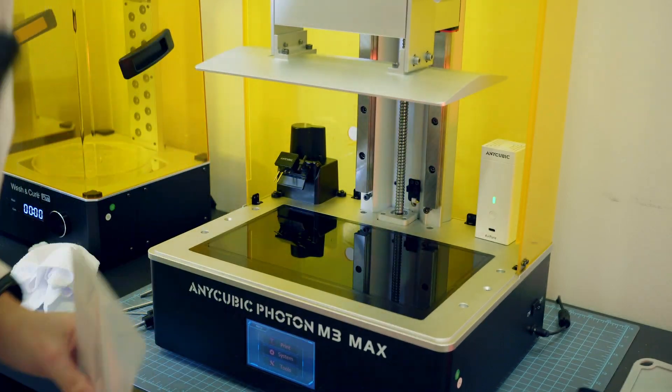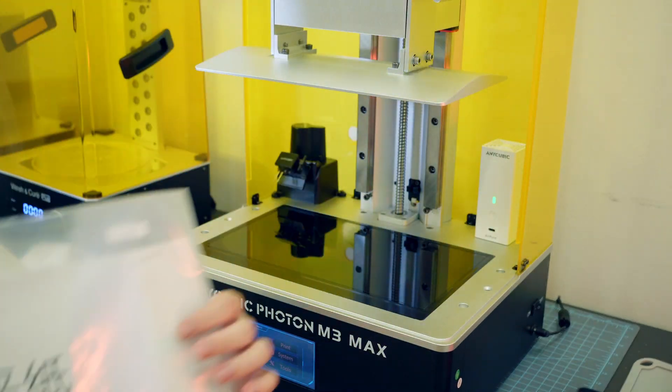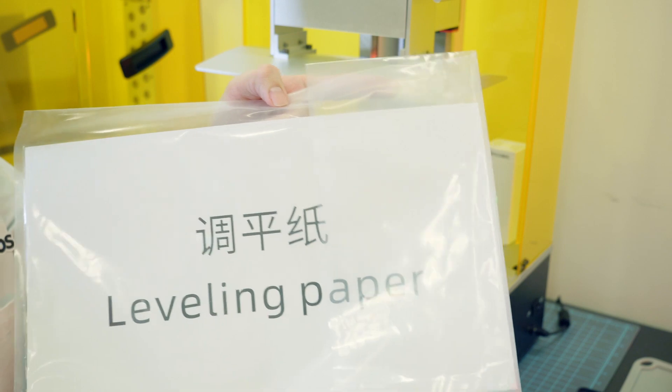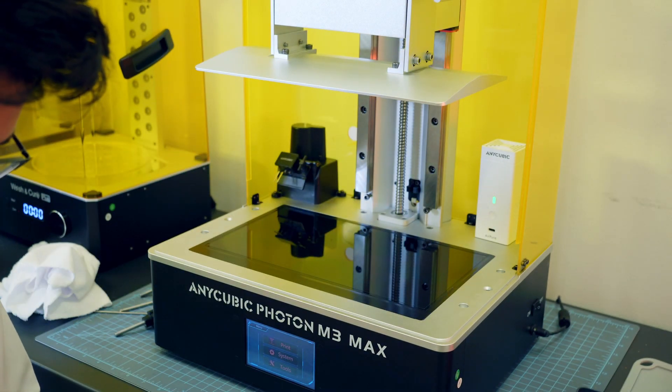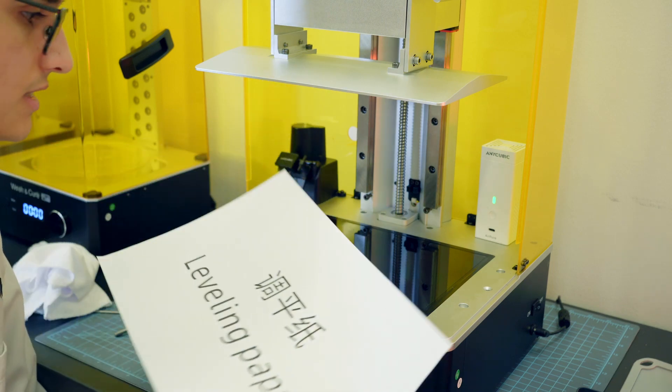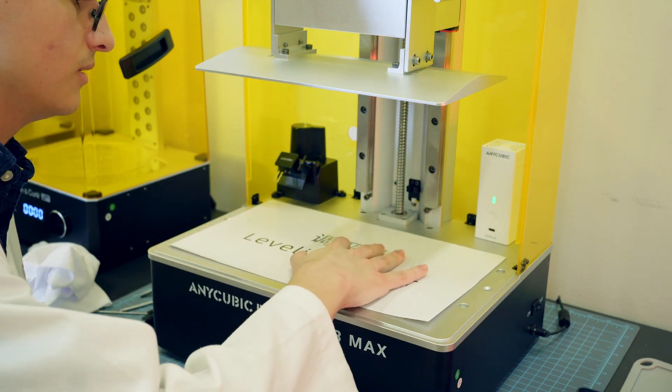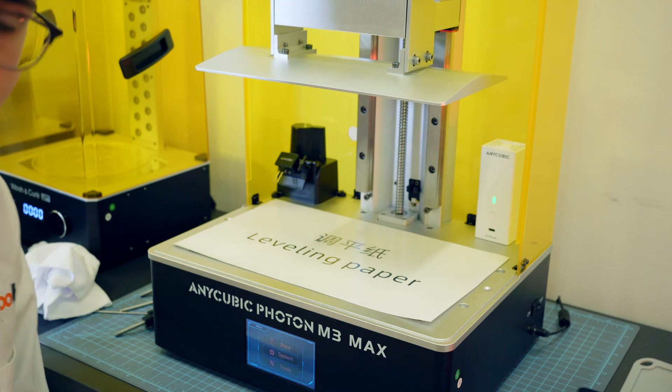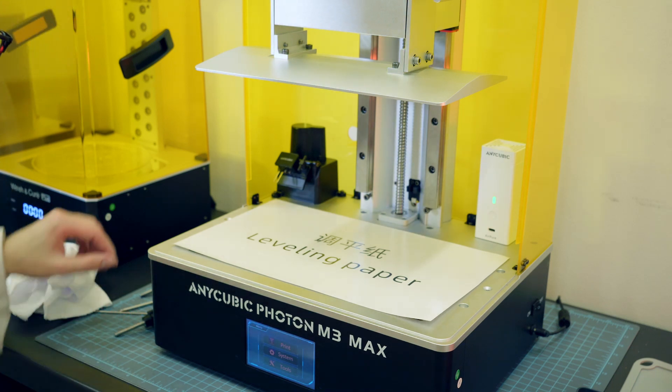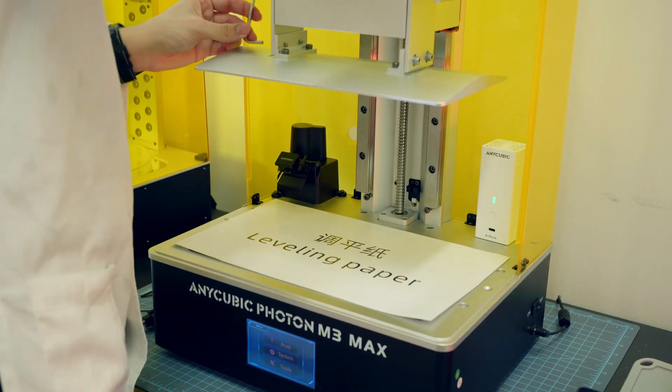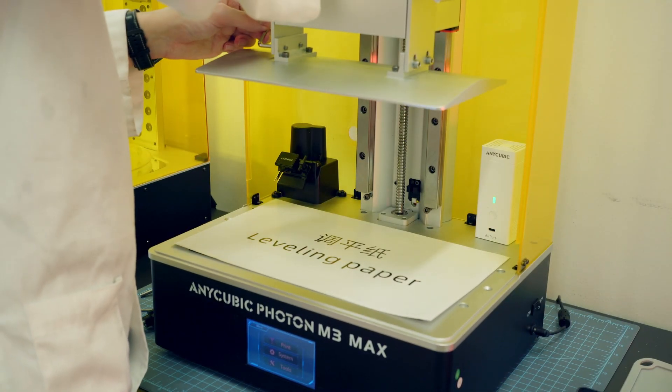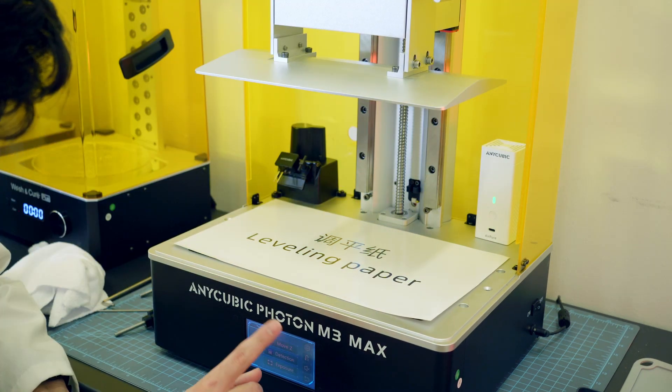Okay so re-leveling the build plate is super easy. We're just going to grab our Anycubic leveling paper and we're going to place it over top the screen like so and we're also going to go ahead and take our largest hex and just loosen the build plate.